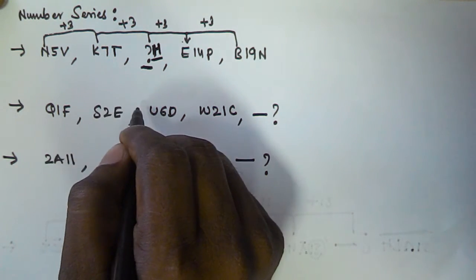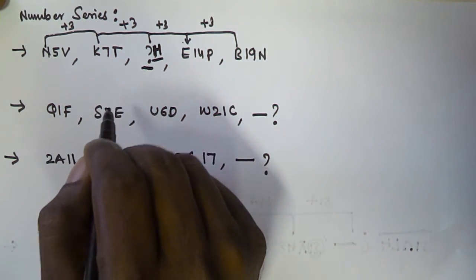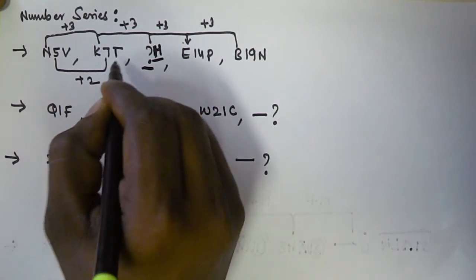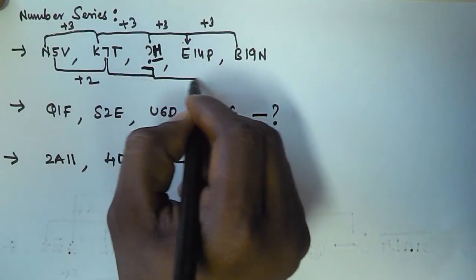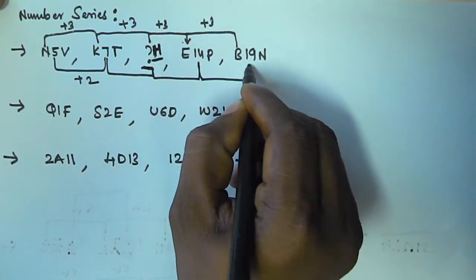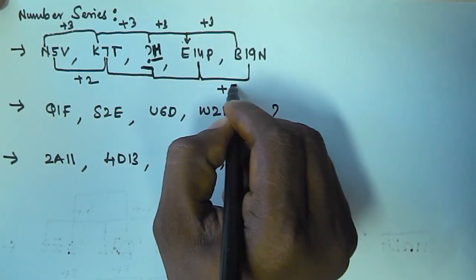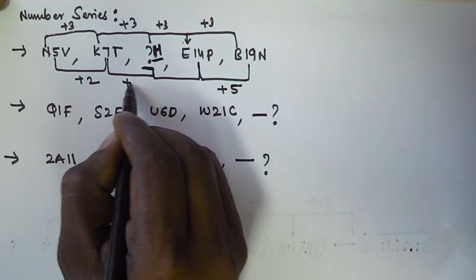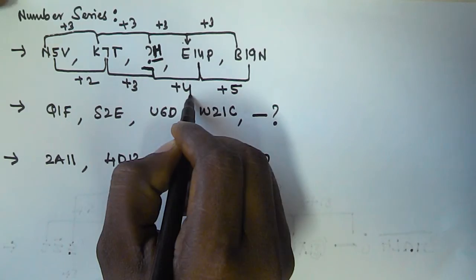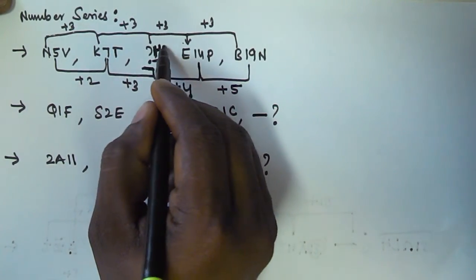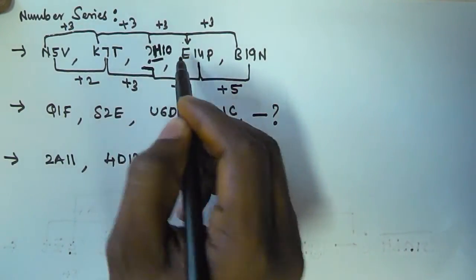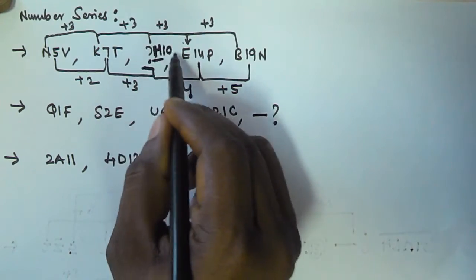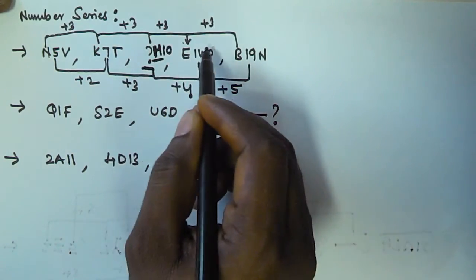Now for the numbers: 5 plus 2 is 7. From 7 to the missing number and from there to 14 we don't know yet, but from 14 to 19 is plus 5. Since it goes plus 2 then plus 5, I can take the gaps as plus 3 and plus 4. So 7 plus 3 is 10, and 10 plus 4 is 14 — that satisfies. So the middle number is 10, giving us H10.